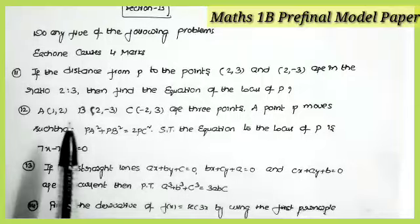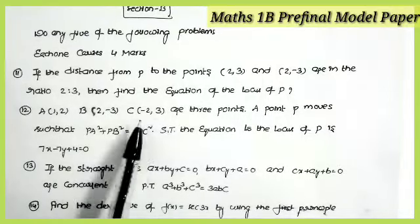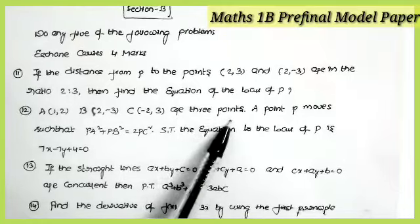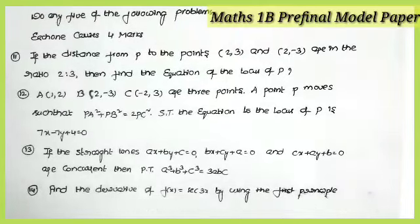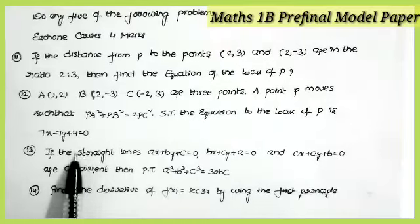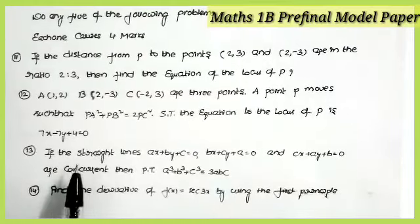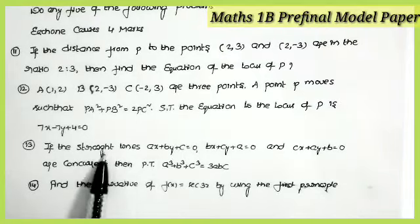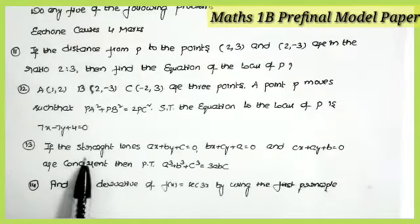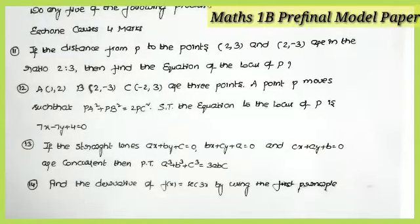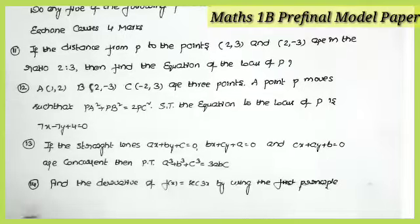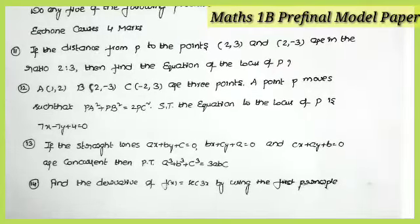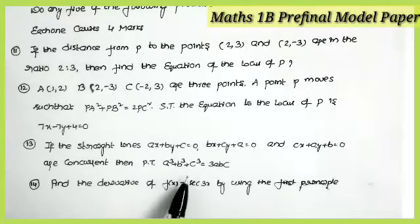Question 12: if A(1, 2), B(2, −3), C(−2, 3) are three points and a point P moves such that PA² + PB² = 2·BC², show that the equation of the locus of P is 7x − 7y + 4 = 0. Question 13 is from Straight Lines: if the straight lines ax + by + c = 0, bx + cy + a = 0, and cx + ay + b = 0 are concurrent, show that a³ + b³ + c³ = 3abc.